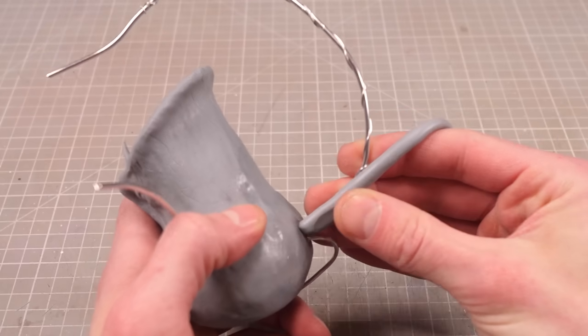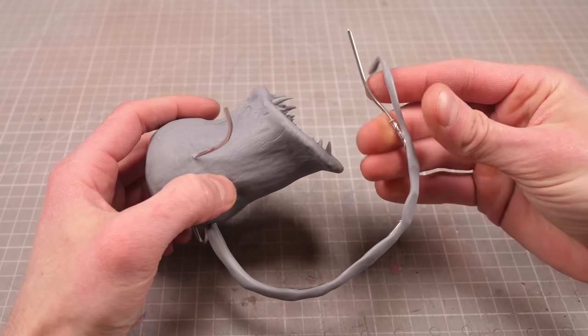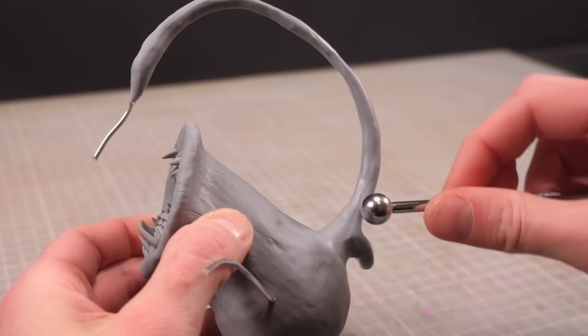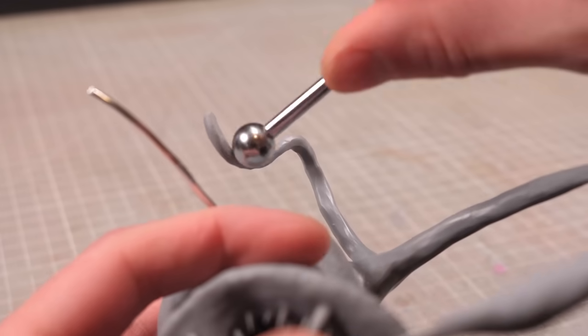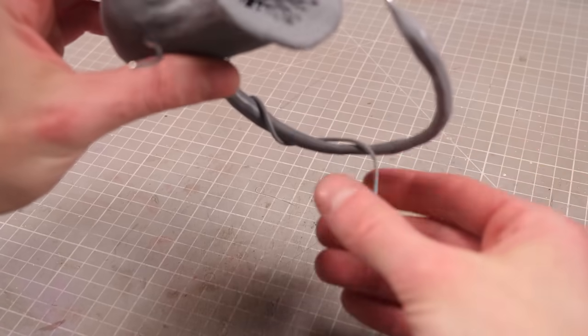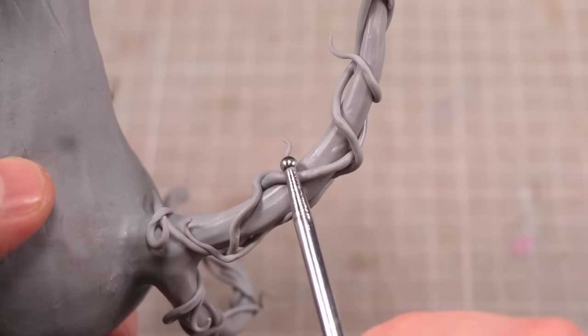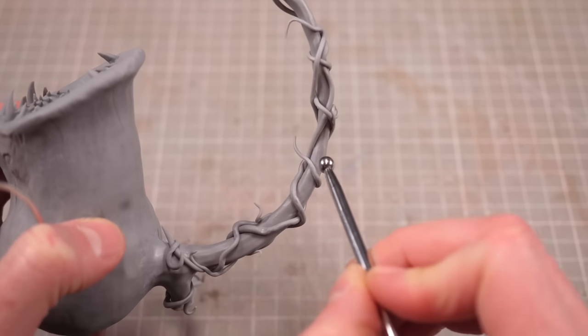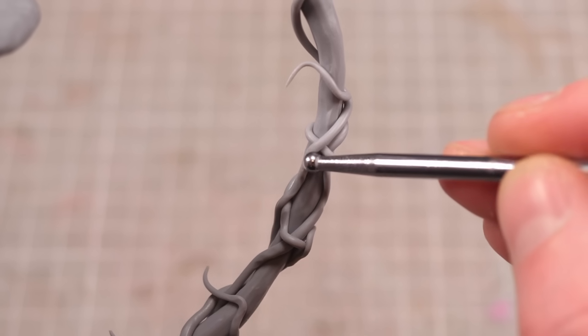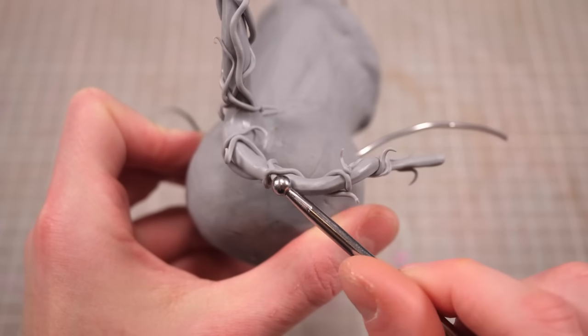Once the wires are in place I can wrap the big viney bit in the back with an extra long wormy dealie of clay give it a bit of a walkie roller texture then wrap it in a bunch of smaller vines. I can then come back with some small ball styluses to poke and prod it until the vines look a little less smooth and a little bit more natural.